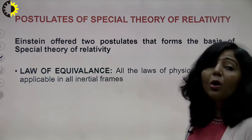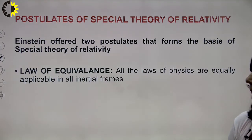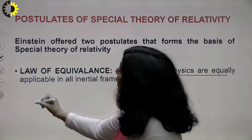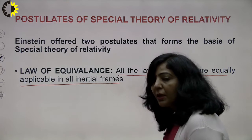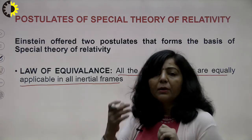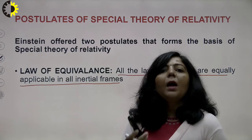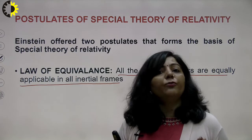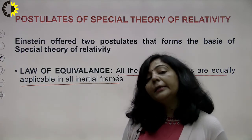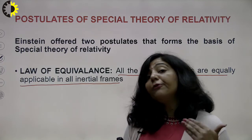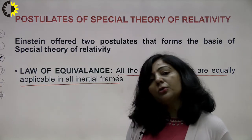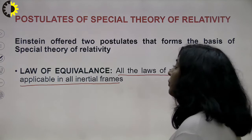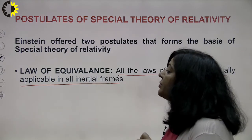The first postulate is known as the law of equivalence or principle of equivalence. According to this, all laws of physics are equally applicable in all inertial frames. If there are two inertial frames and a particular law of physics is applicable in my inertial frame, then that same law is equally applicable in your inertial frame. This is the first postulate of the Special Theory of Relativity.